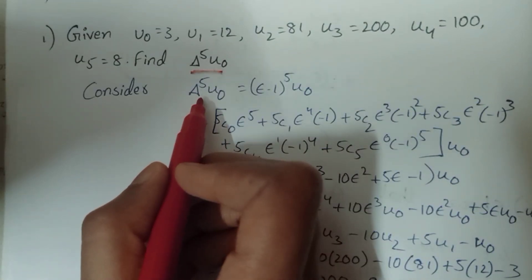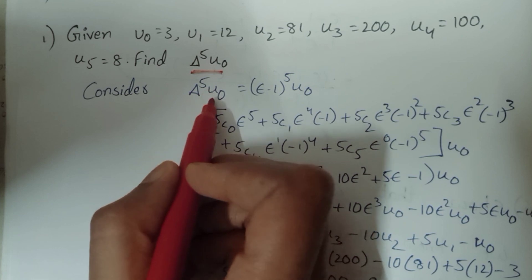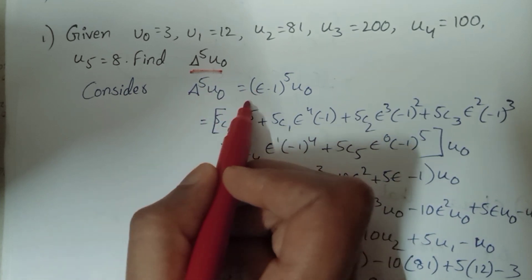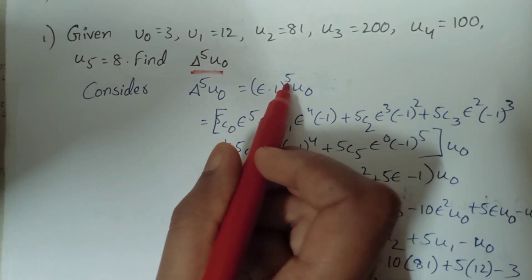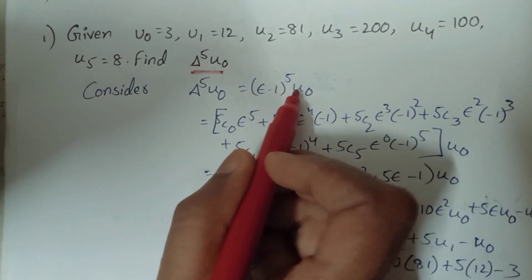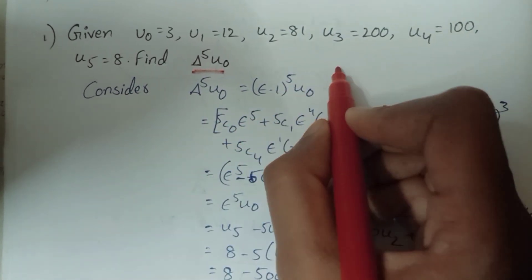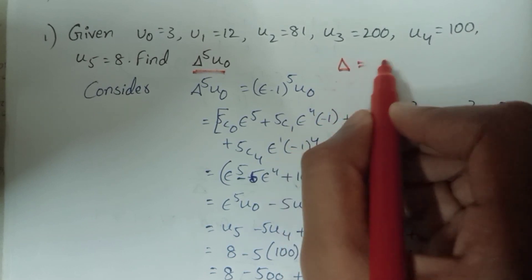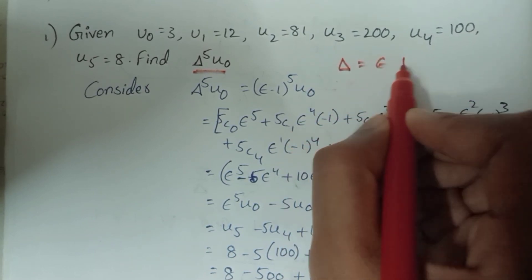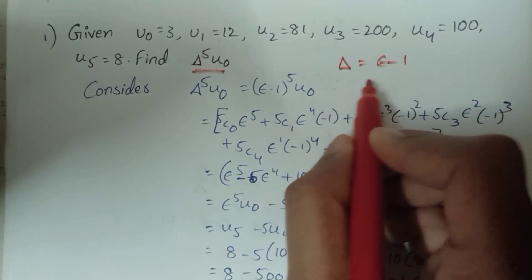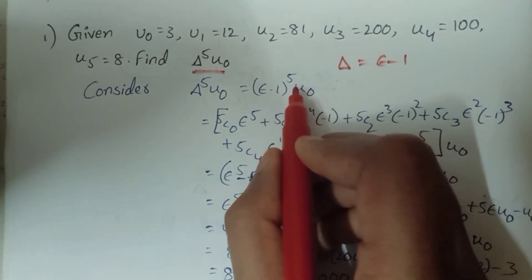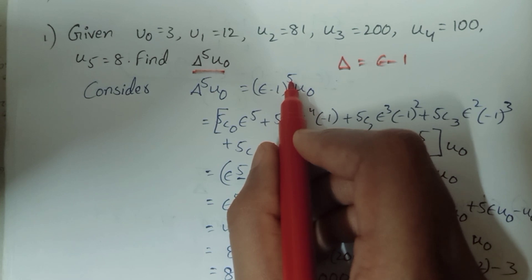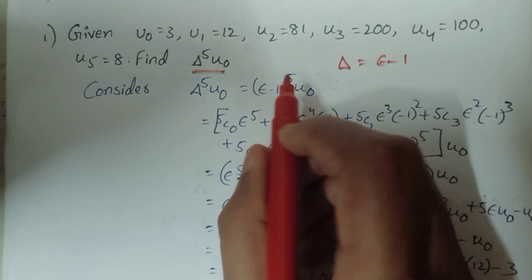Consider delta power 5 u0 equal to (e minus 1) power 5 u0. The delta value is (e minus 1). So substitute delta power (e minus 1) power 5 into u0.